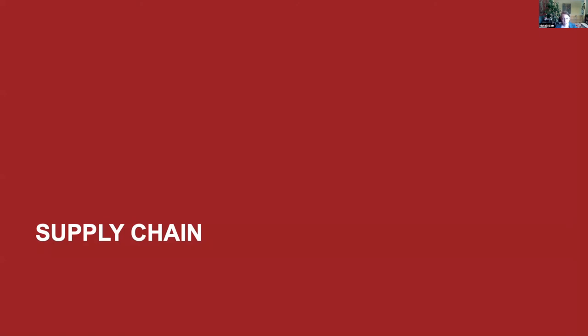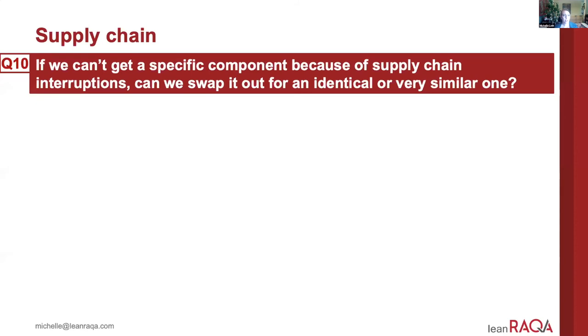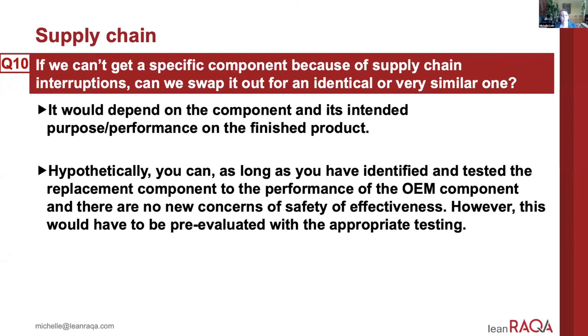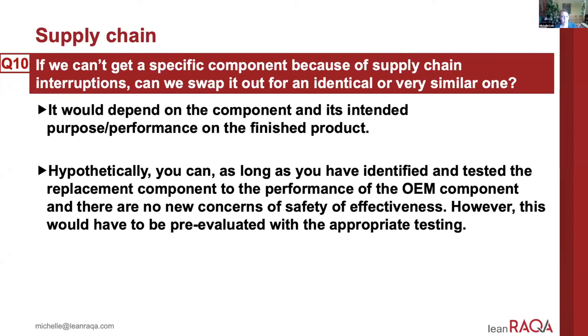After a brief pause for questions, Michelle finishes the supply chain section. Question: If we can't get a specific component because of supply chain interruptions, can we swap it out for an identical or very similar one? Generally yes, as long as you've identified and tested the replacement component and verified that it performs the same way in your finished device. This can include performance testing, biocompatibility, sterility, and shelf life considerations.